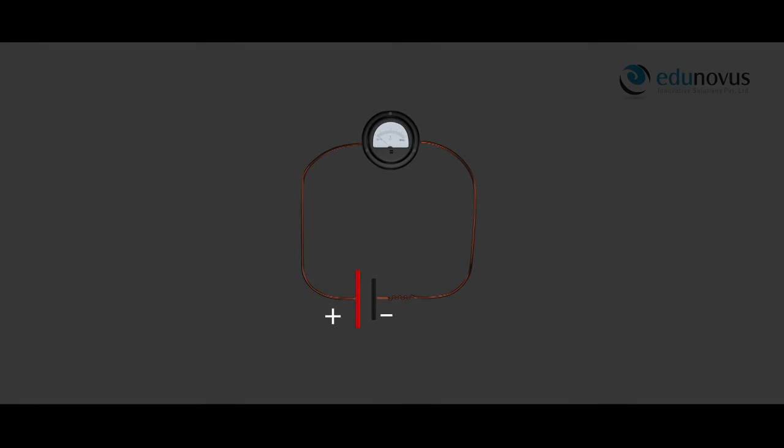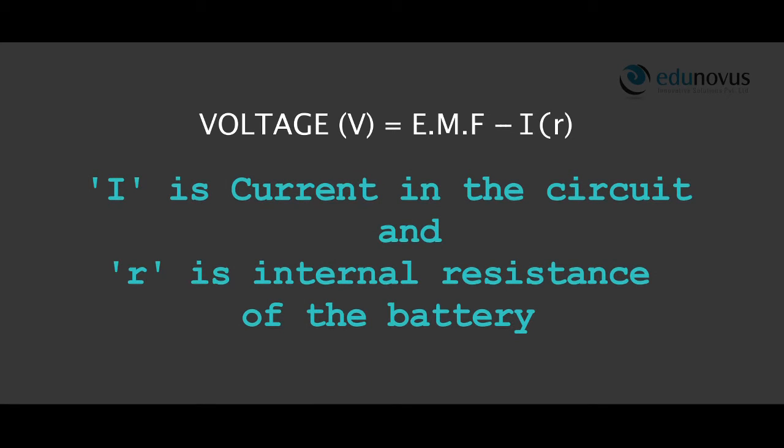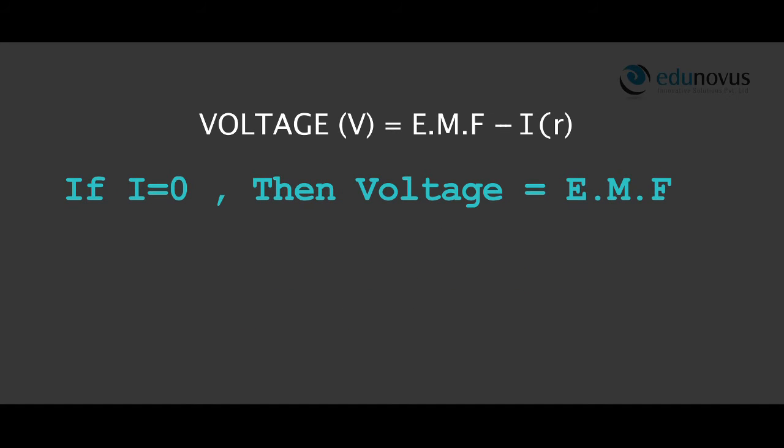This is because the battery in reality has some internal resistance R. The voltage across the terminals of the battery V is EMF minus IR, where I is the current in the circuit and R is the internal resistance of the battery. So in order to measure the EMF of the cell, the current in the battery should be zero.